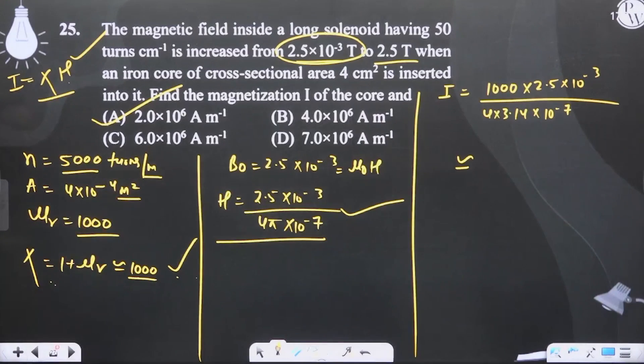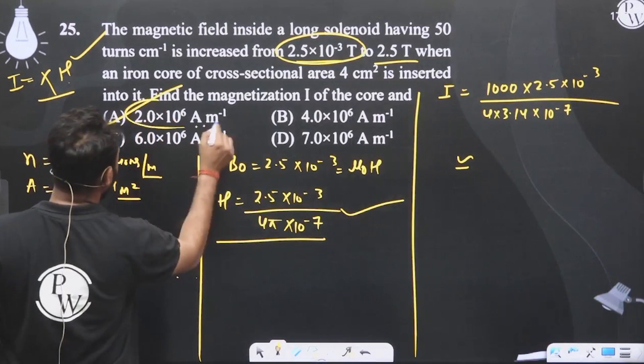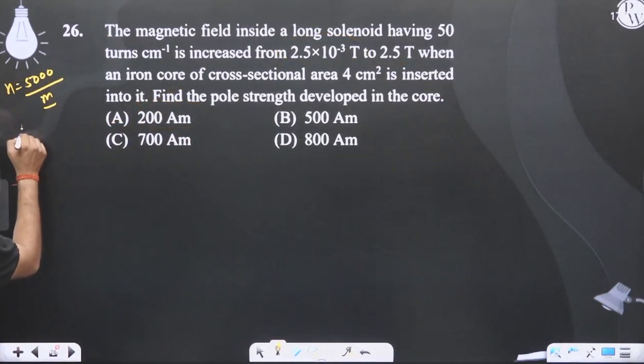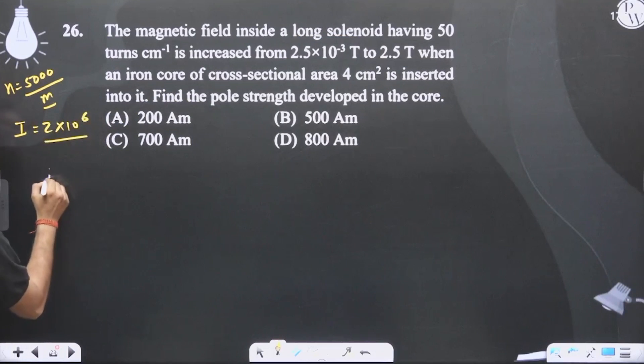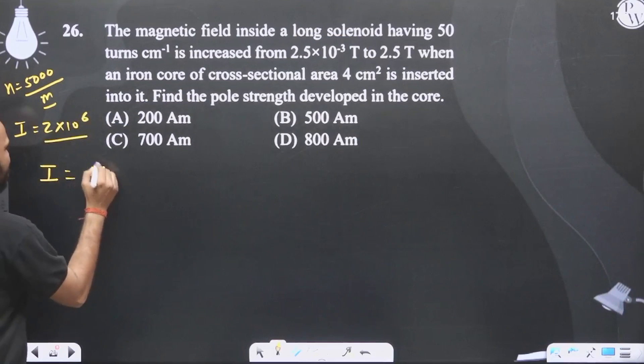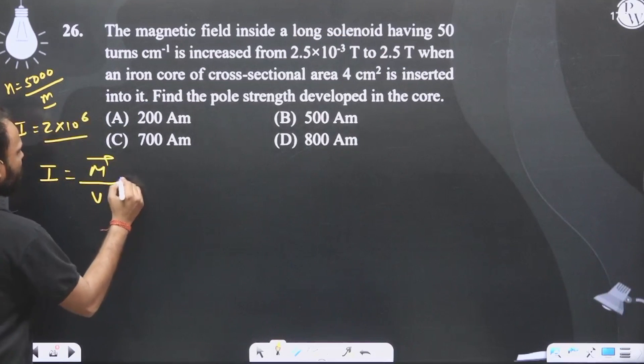I vector here, we have found out how I vector was 2 into 10 raise to power 6. I value we have found out is 2 × 10^6. Now what is magnetization vector? It is nothing but net magnetic moment per unit volume.